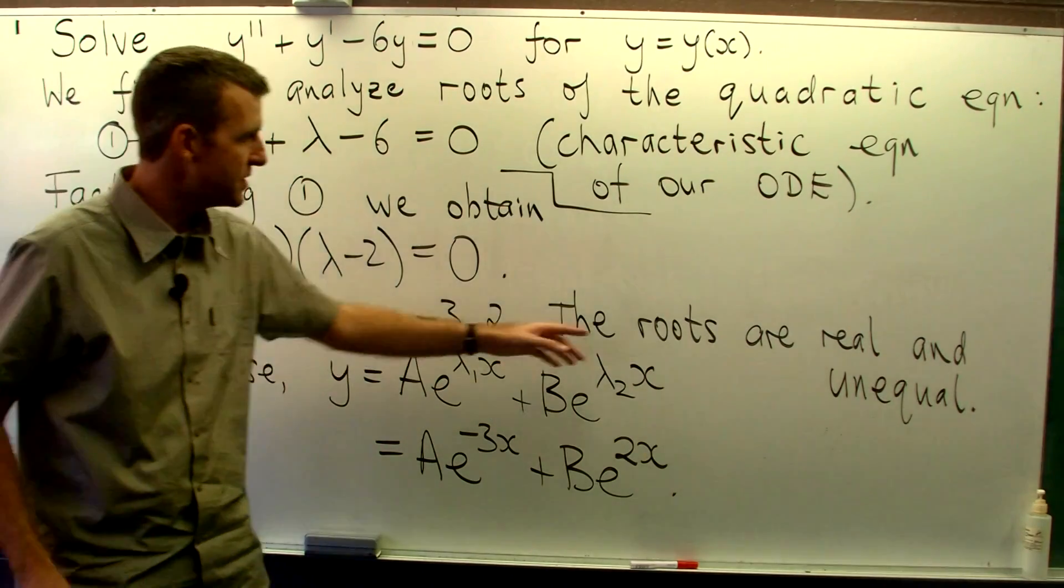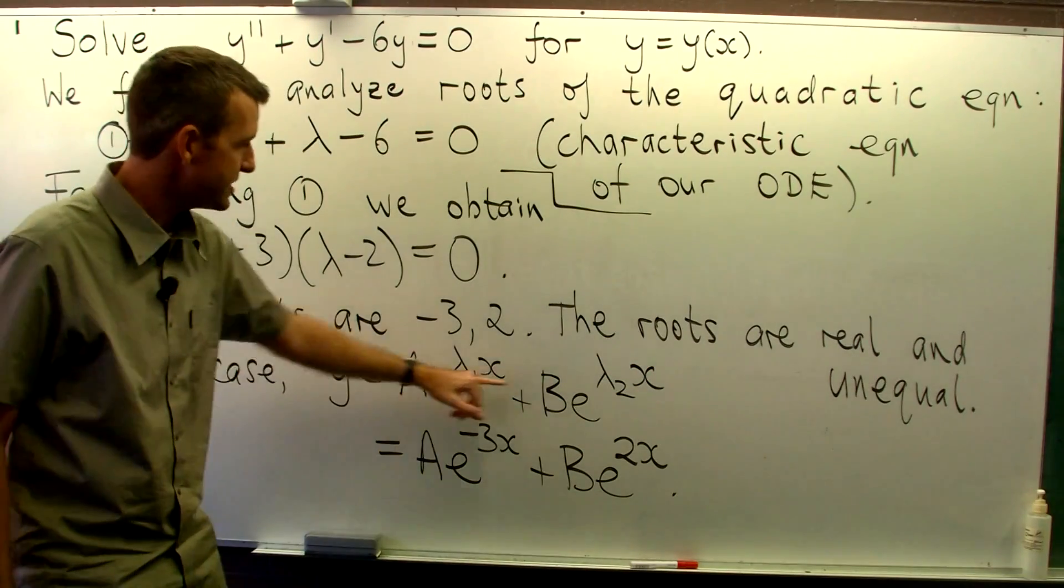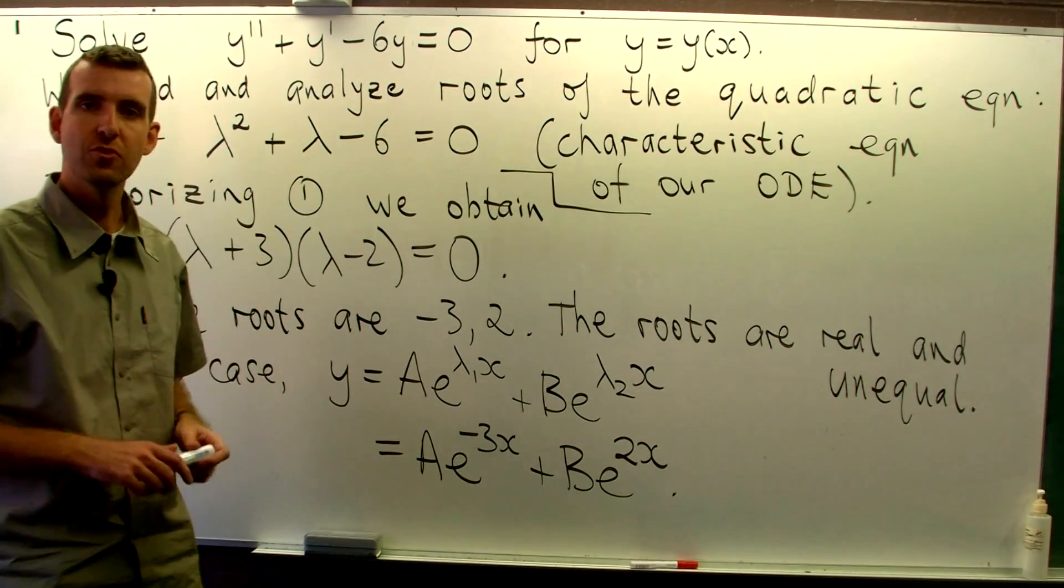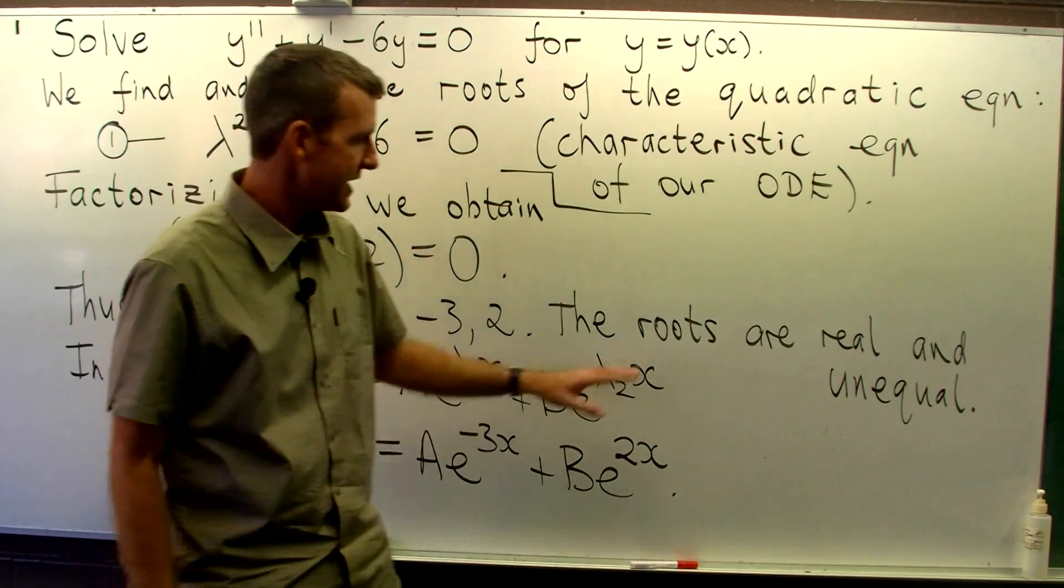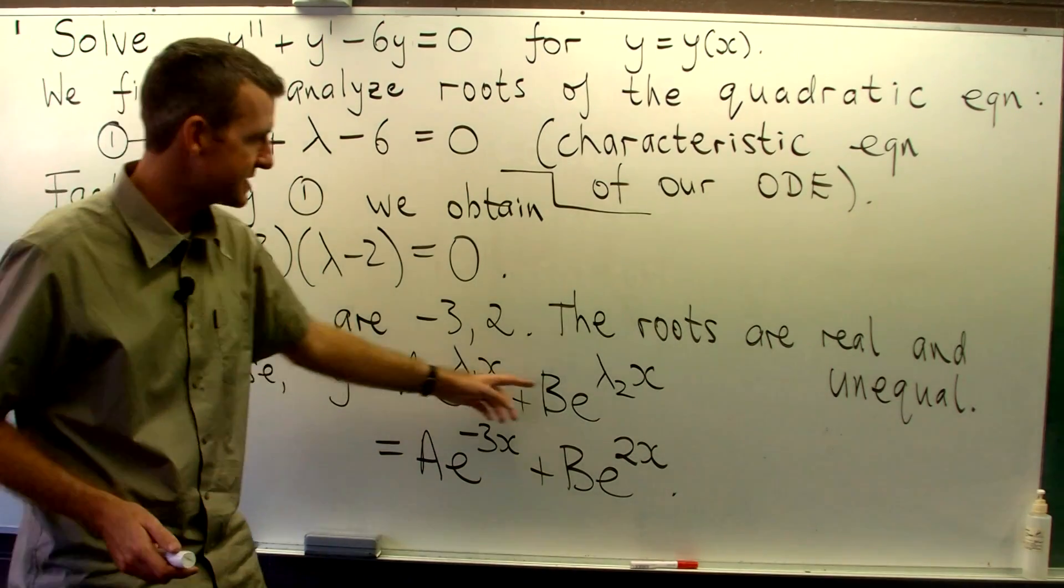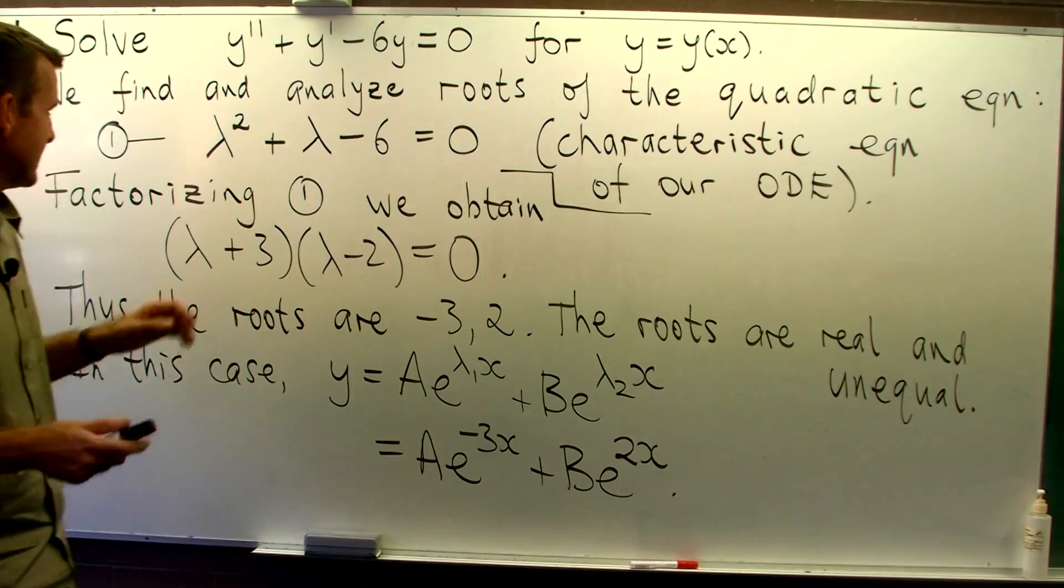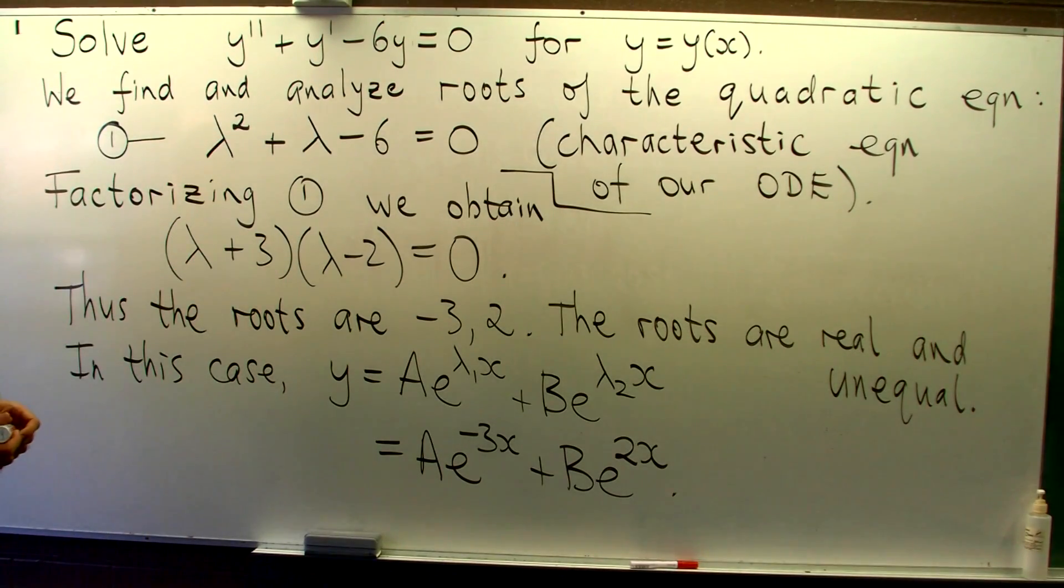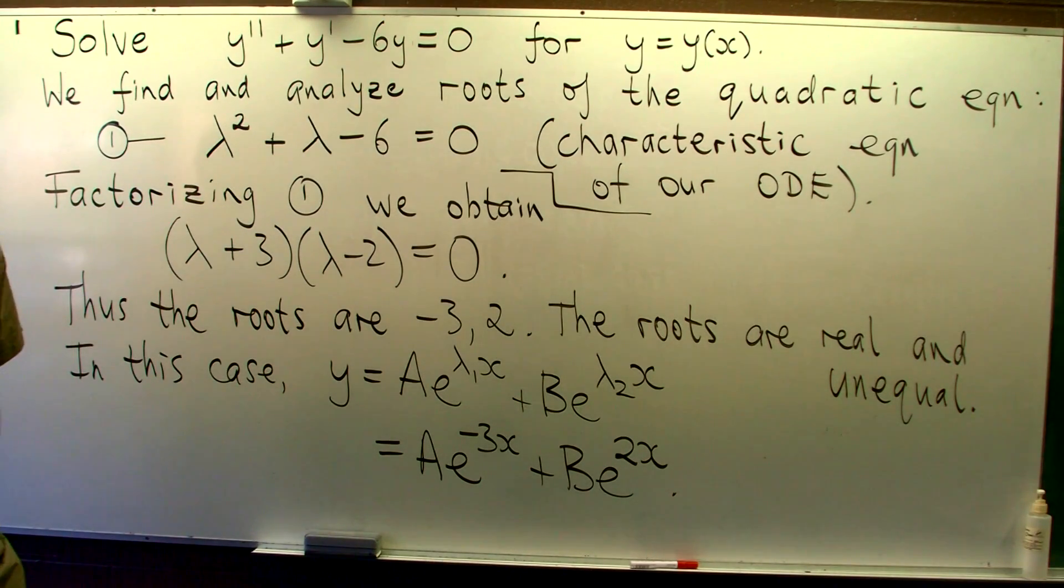Now, if the roots were real and equal, then this would not apply anymore, there would be another form of the solution. And also, if the roots were complex valued, again, this is not the best way to go. So very simple, just reducing the analysis down to solving a quadratic. Thank you very much.